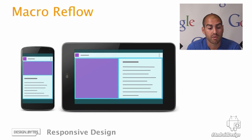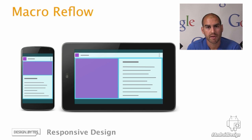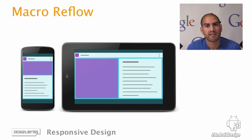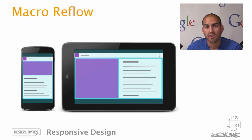The second technique is one we call macro reflow — taking the major building blocks of your application and reflowing or rearranging them on the screen to make better use of the space. In this example, we've simply moved a large header image and body text from being vertically stacked above each other to being horizontally stacked next to each other. This gives the image more space on the larger screen real estate, while also avoiding excessive line lengths on a landscape device. This technique is not only useful for different sized devices — you can also use it when changing between different orientations on the same device.